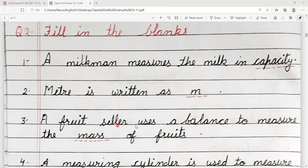Number 3, a fruit seller uses a balance to measure the dash of fruits. Fruit seller, when fruit measures, what is it? Mass.